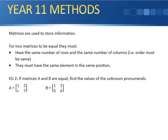Matrices are used so we can store information. For two matrices to be equal, they must have the same number of rows and the same number of columns. That means the order must be the same. They must have the same elements in the same position. That's the only way they can be equal.